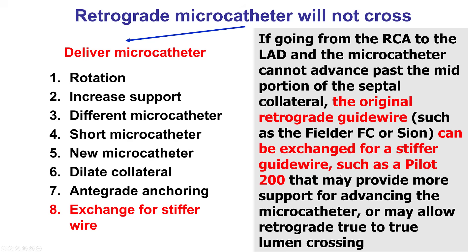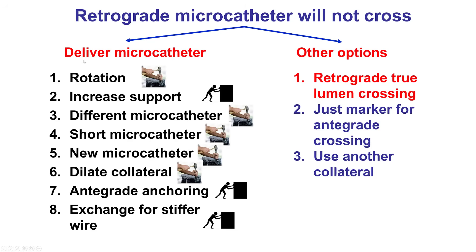The last option — assuming the microcatheter is advanced for the larger part of the collateral — is to exchange the original wire used to cross the collateral, such as the Sion wire or the Sion Black, for a stiffer guide wire such as the Pilot 200. This can potentially even cross the CTO in the retrograde direction, or provide more support for advancing the microcatheter. All the strategies discussed so far aim to either modify the friction or the collateral by dilating it, or increase support via guide extension, various anchoring forms, or a stiffer wire.